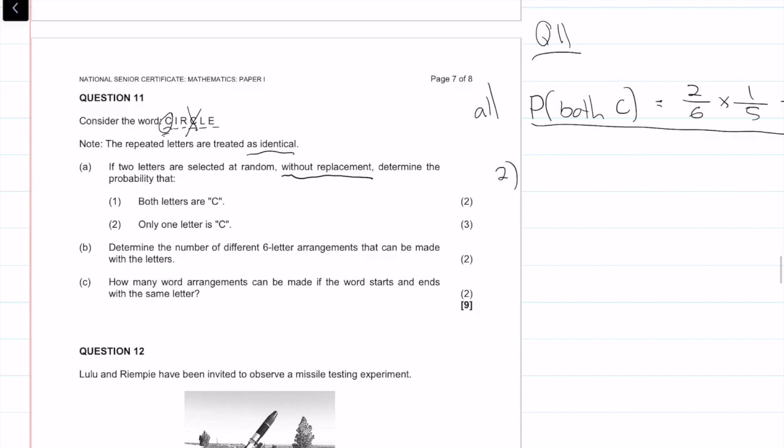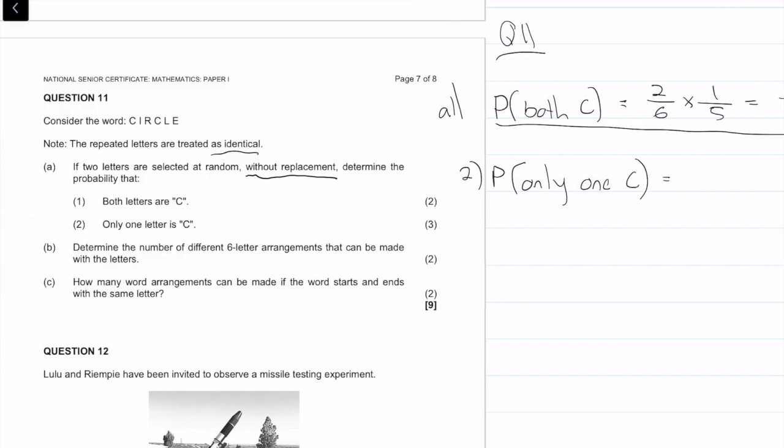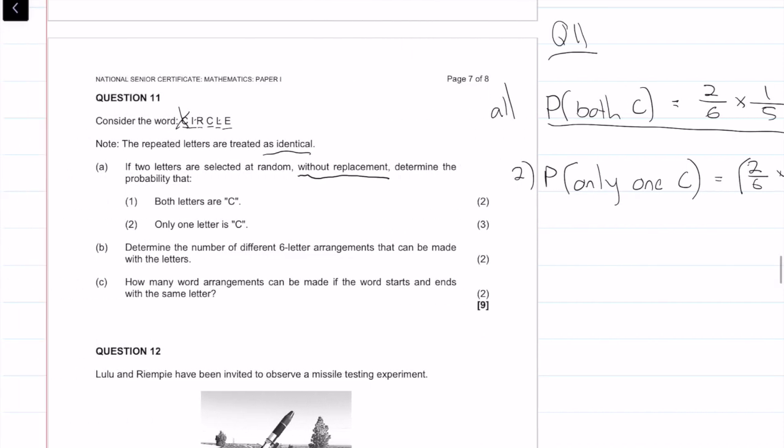So question A2 says only one letter is a C. Once again, let's say we have all six letters. So the probability that we only one C. So the probability that we get a C on the first one is two over six. So we've taken a C. But now for the second one, we don't want a C. So we want the non C's, which is four, and there are only five options, four over five.